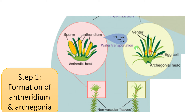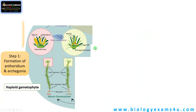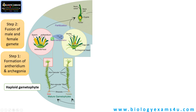The sperm cells are biflagellated. Water is essential for fertilization. The sperm cells attach to the neck portion of the archegonium, enter, and fuse with the egg cell. Step two is the fusion of male and female gametes, and step three is the formation of the zygote. The zygote is the first cell of the sporophyte and begins the sporophytic phase.